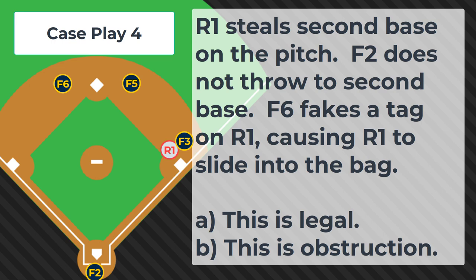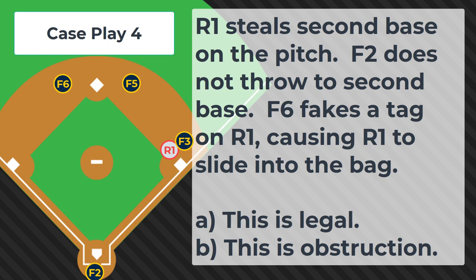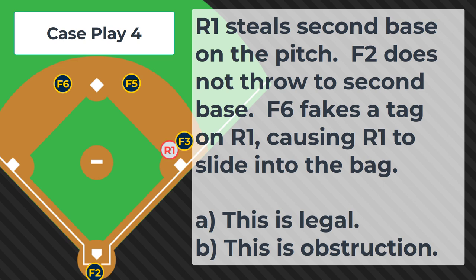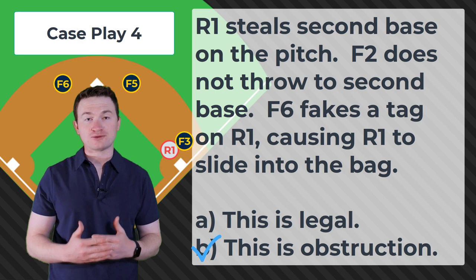Case play number four: R1 steals second base on the pitch. F2 does not throw to second base. F6 fakes a tag on R1, causing R1 to slide into the bag. Is this legal or is this obstruction? The correct answer is this is obstruction. Article 2 for the definition of obstruction specifically says that fake tags are obstruction.